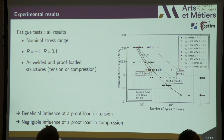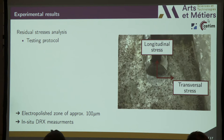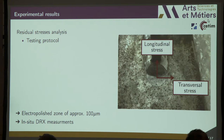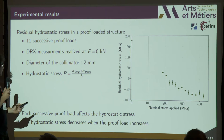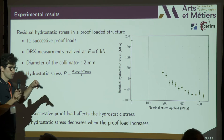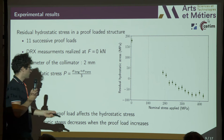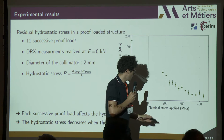To better understand the phenomenon, we undertook residual stress analysis. In the stress concentration zone, we electropolished the zone to a depth of 100 microns, and then performed X-ray diffraction measurements. On only one structure, we applied 11 successive proof loads in ascending order, then came back to zero and conducted measurements. We used a collimator diameter of 2 mm. With longitudinal and transversal residual stresses, we calculated the hydrostatic stress. This graph gives the residual hydrostatic stress according to the nominal stress applied for the proof load.